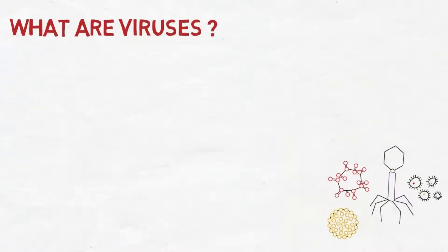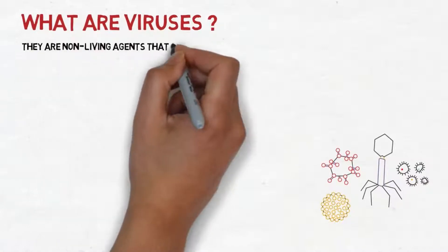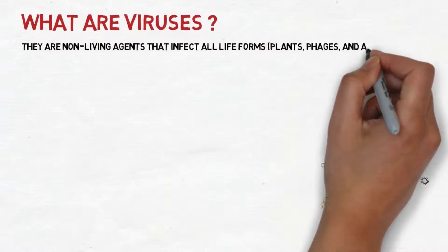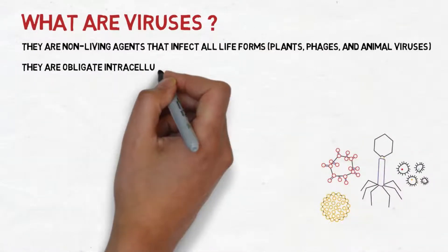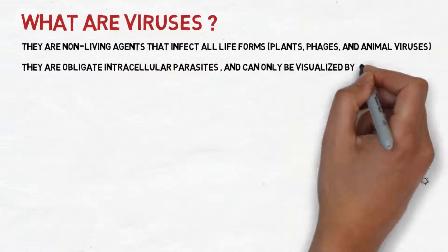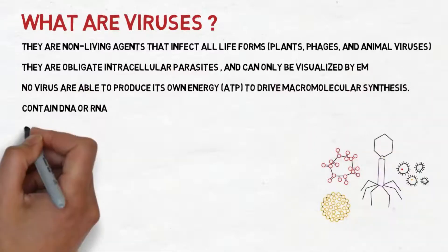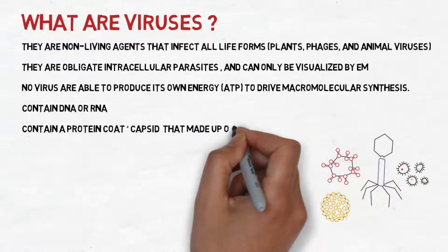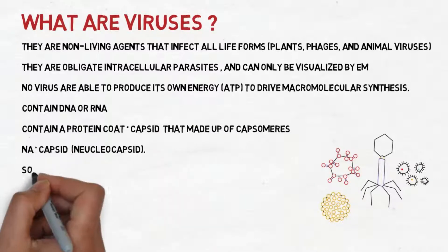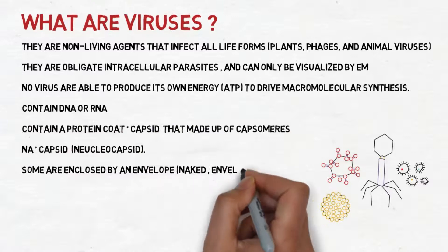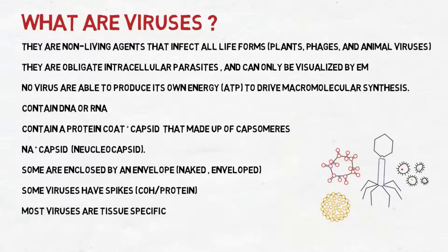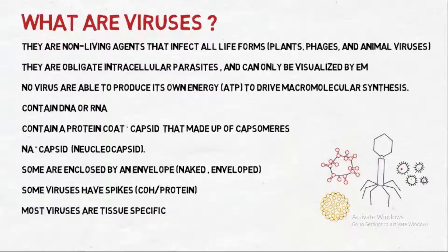So as a start, what are viruses? Viruses are nonliving agents that infect all life forms like plants, phages, and animal viruses — and by phages we mean bacteria. They are obligate intracellular parasites and can only be visualized by the electron microscope. No virus is able to produce its own energy to drive macromolecular synthesis. They either contain DNA or RNA. They contain a protein coat called capsid, made up of capsomeres. Nucleic acid plus capsid together is called nucleocapsid. Some viruses are enclosed by an envelope, so viruses can either be naked or enveloped. Some viruses have spikes made up of carbohydrates and protein. Most viruses are tissue specific.